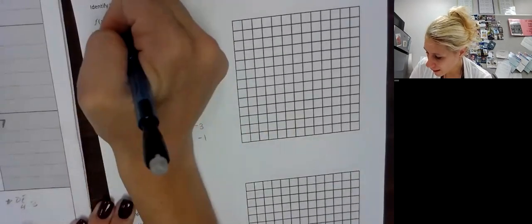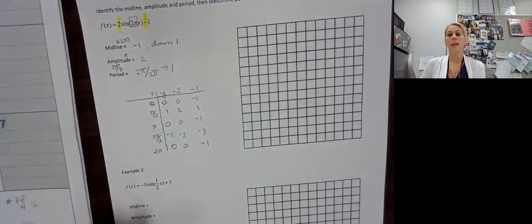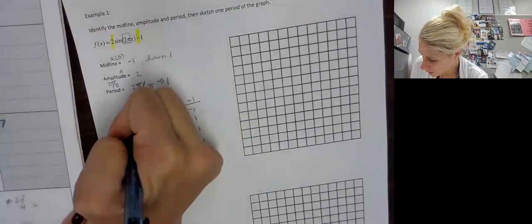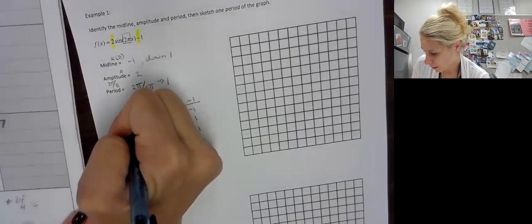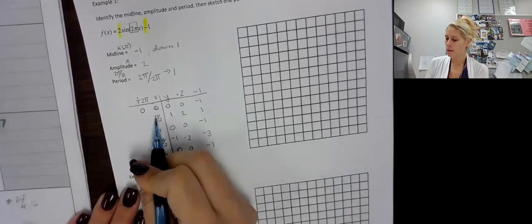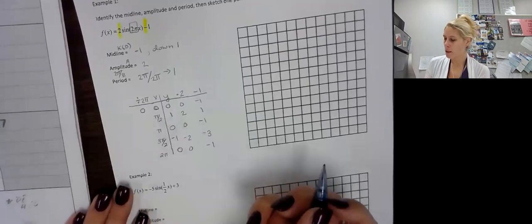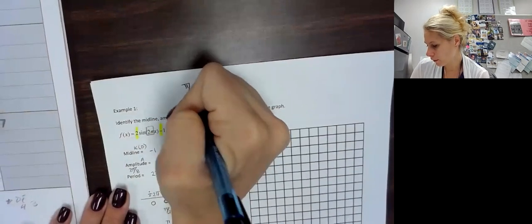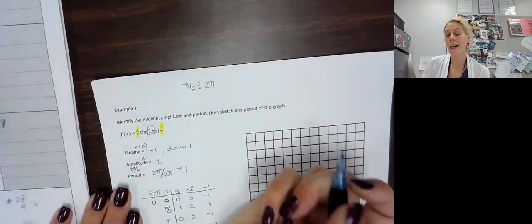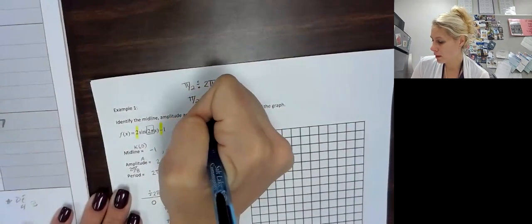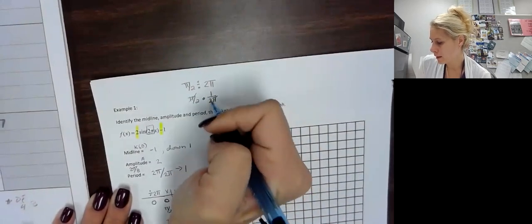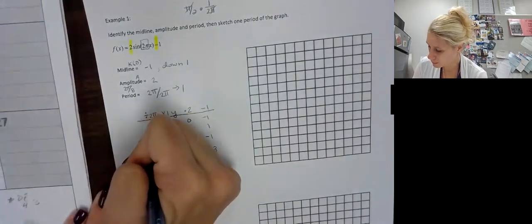Now our X values. When we have 2 pi on the inside, we think of the opposite and divide by 2 pi. So 0 divided by 2 pi is still 0. For pi over 2 divided by 2 pi, dividing is the same as multiplying by the reciprocal, so the pi cancels and we get 1 over 4. For pi divided by 2 pi, the pi cancels and we're left with 1 half.